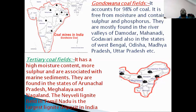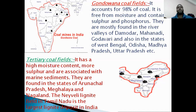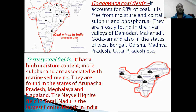In India, there are two types of coal fields: Gondwana and tertiary. Gondwana coal fields account for 98% of coal in India. They are free from moisture and contain sulfur and phosphorus, and are mostly found in the river valleys of Damodar, Mahanadi, and Godavari, and in states such as West Bengal, Odisha, Madhya Pradesh, and Uttar Pradesh. Tertiary coal fields have high moisture content, more sulfur, and are associated with marine sediments. They are mostly found in the northeastern states of Arunachal Pradesh, Meghalaya, and Nagaland. The Neyveli lignite field in Tamil Nadu is the largest lignite deposit in India.